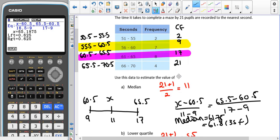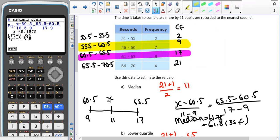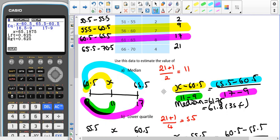Then using n plus 1 divided by 2, we see that the median is piece of data number 11. So that's going to be within this group here, somewhere between 60.5 and 65.5. Setting up our straight lines again, we end up with x minus 60.5 divided by 11 minus 9 equals 65.5 minus 60.5 divided by 17 minus 9. And that in the Solver part of our calculator ends up giving us 61.8 to 3 significant figures.